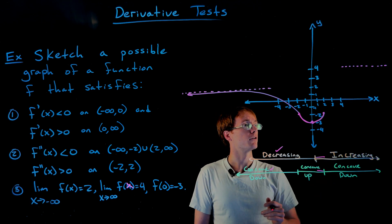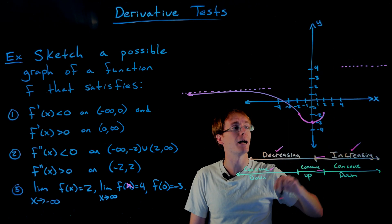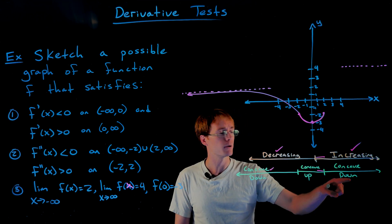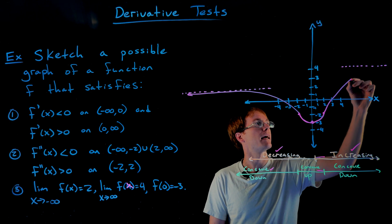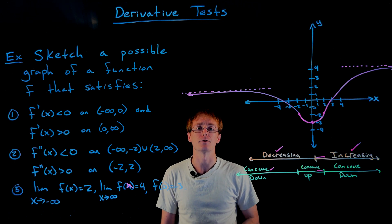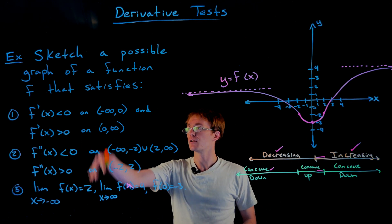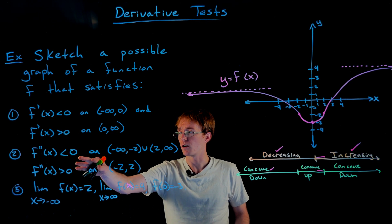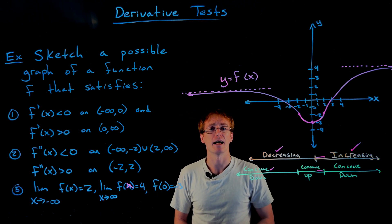For the final interval to the right of x equals two, the function is always increasing, slowly approaching the horizontal asymptote at y equals four, while being concave down. So the graph goes up with a downward bend, which helps it approach that asymptote. In pink, we have the final sketch of y equals f of x, satisfying all the conditions: first derivative signs, second derivative concavity intervals, the limits, and the point the function passes through.